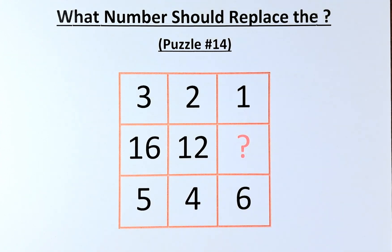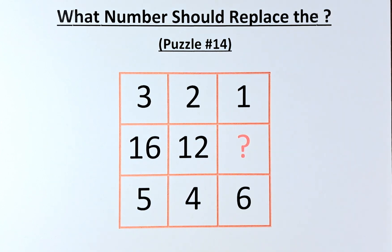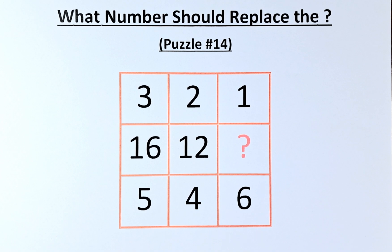Welcome back to the solution of puzzle number 14. What number should replace the question mark? The numbers in the puzzle are 3, 2, 1 in the first row, 16, 12, question mark in the second row, and 5, 4, 6 in the final row.